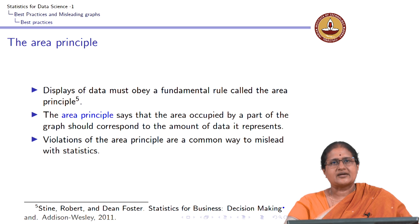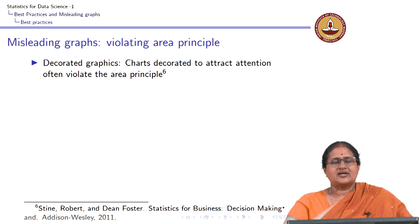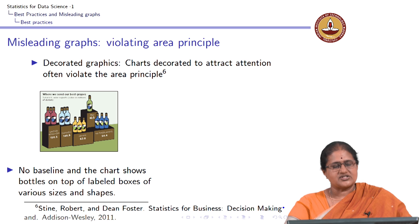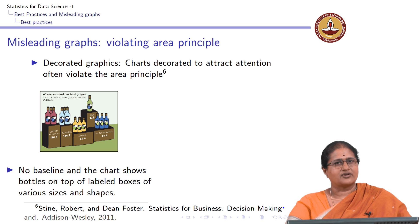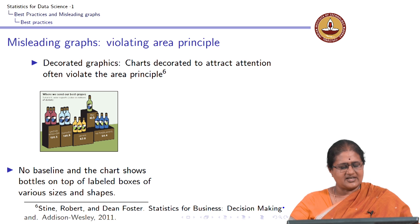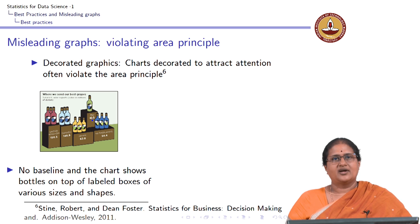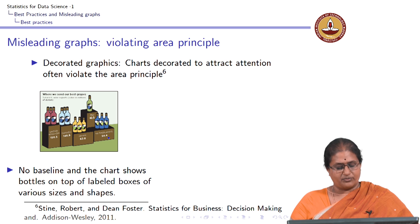What do we mean by this? When we have charts which are decorated to attract attention, for example, let us look at this particular chart. What this chart gives us is the total wine exports in the United States, value in millions of dollars. It tells us United Kingdom is about 150.3, Canada is 146.8, Japan is 82.8, Italy is 42.5, and Netherlands is 34.4.